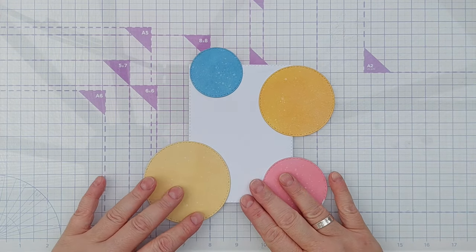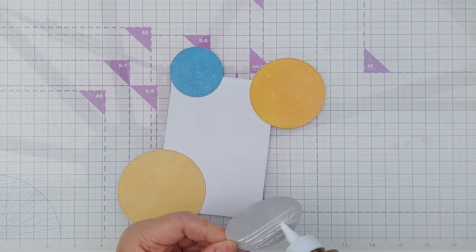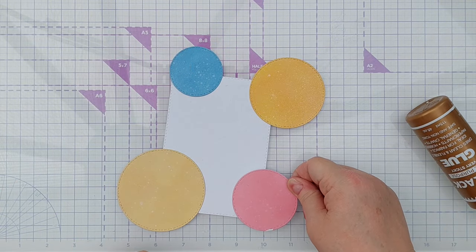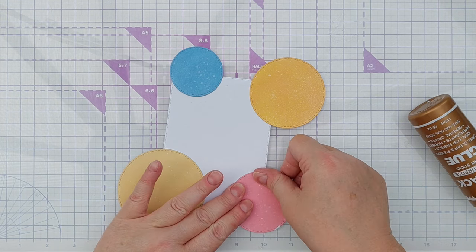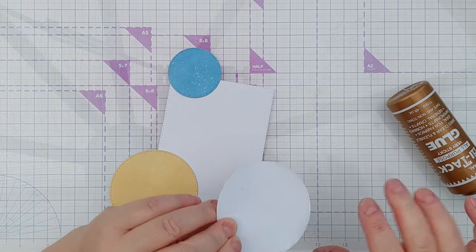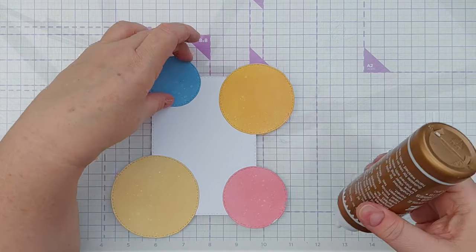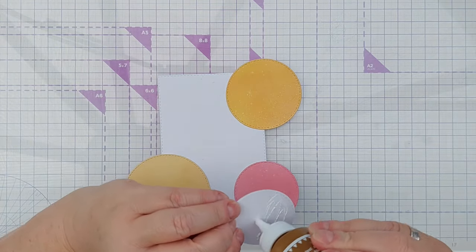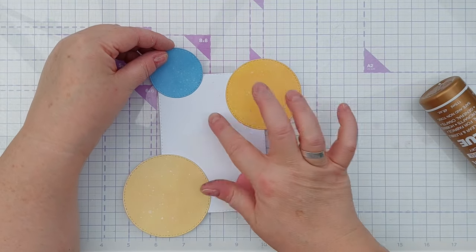Right, back to today's card. I took my four circles and glued them to a panel of hammered textured white card that I'd previously cut down with a stitched rectangle die. This is going to be the panel that goes on the front of my card. I placed each circle in the corner and once they were glued down sufficiently, I just used scissors to trim off the overhang.